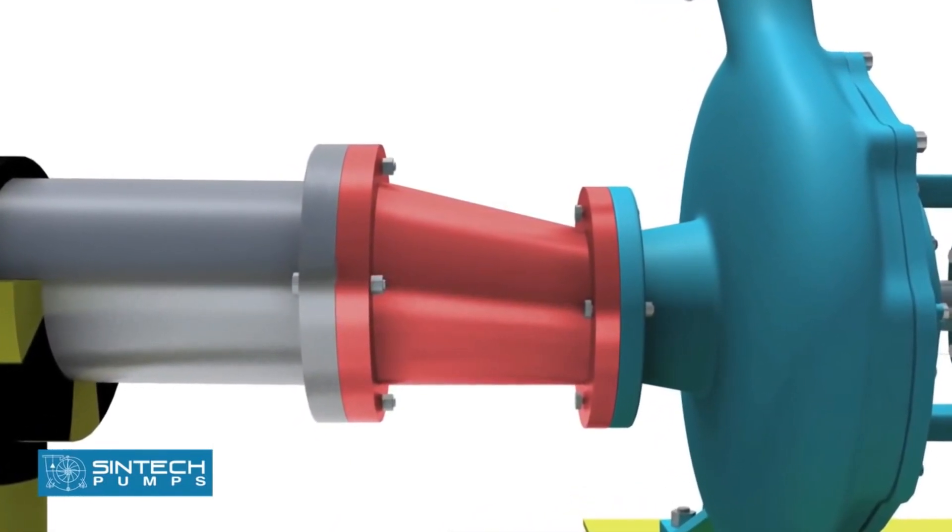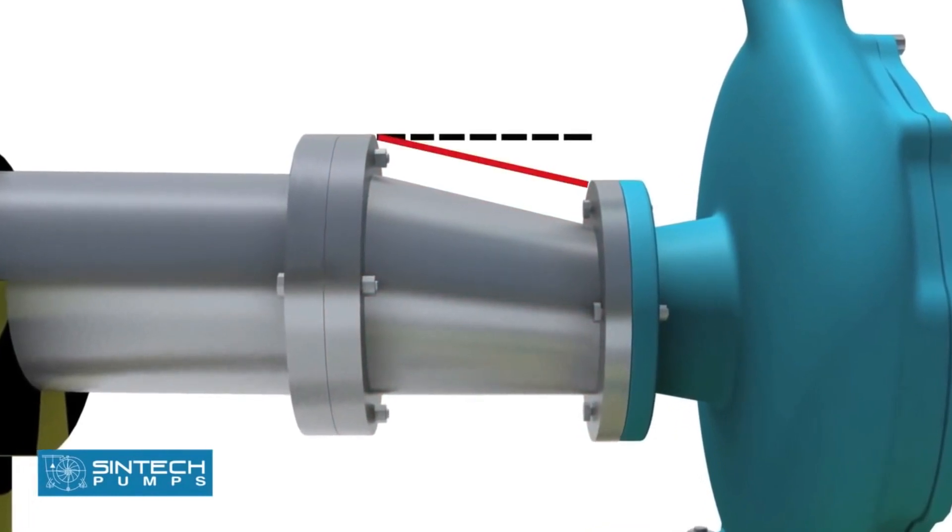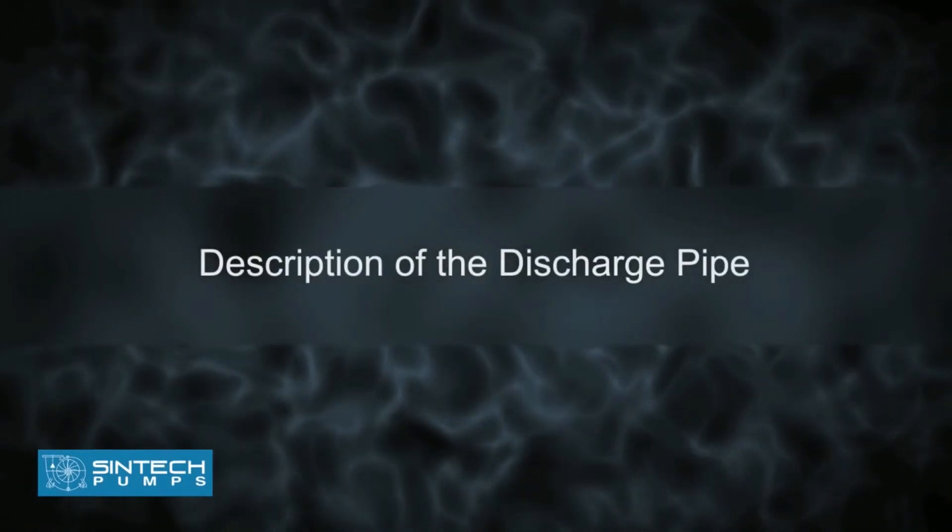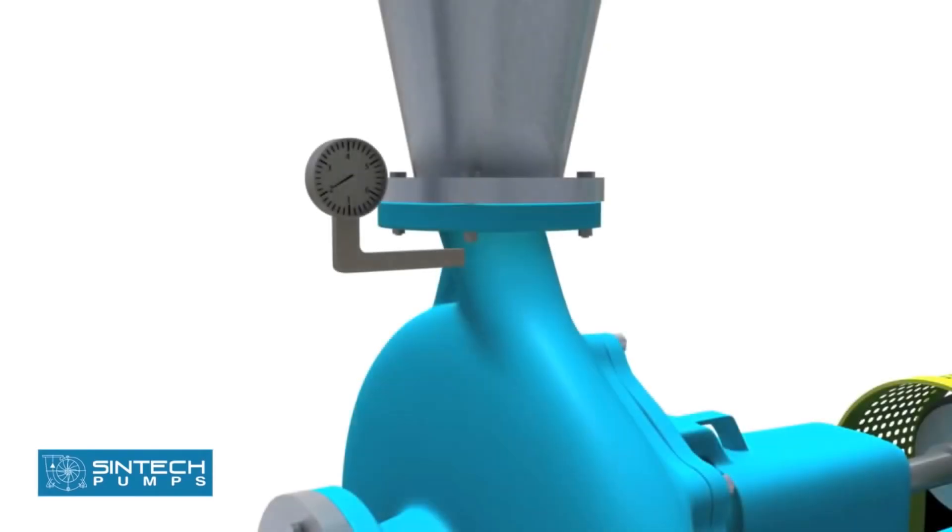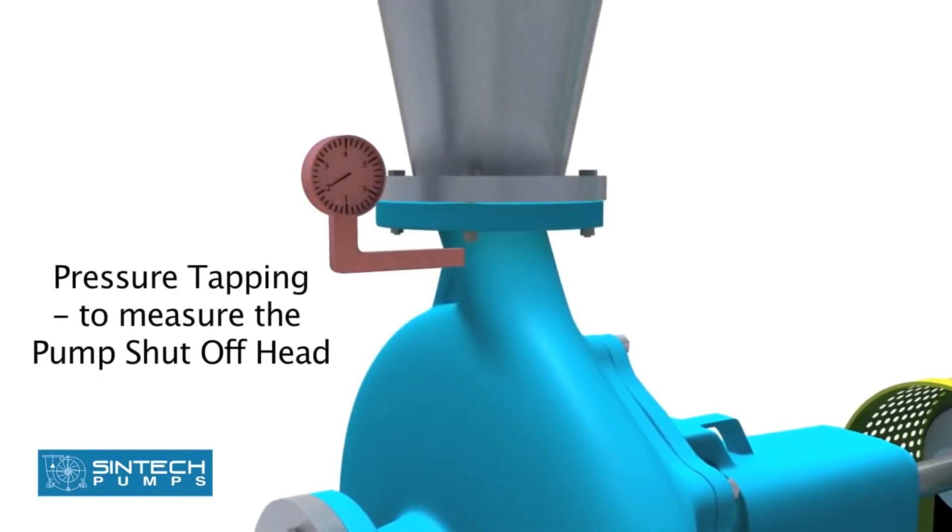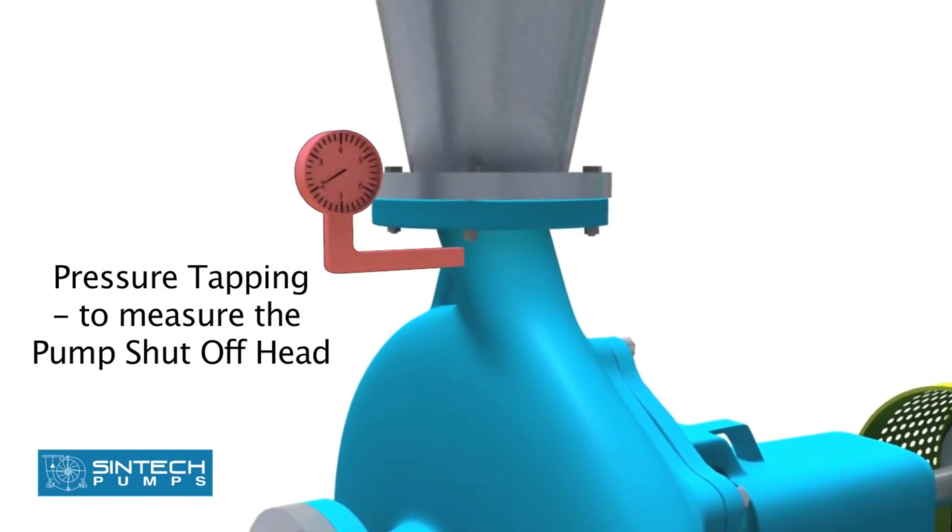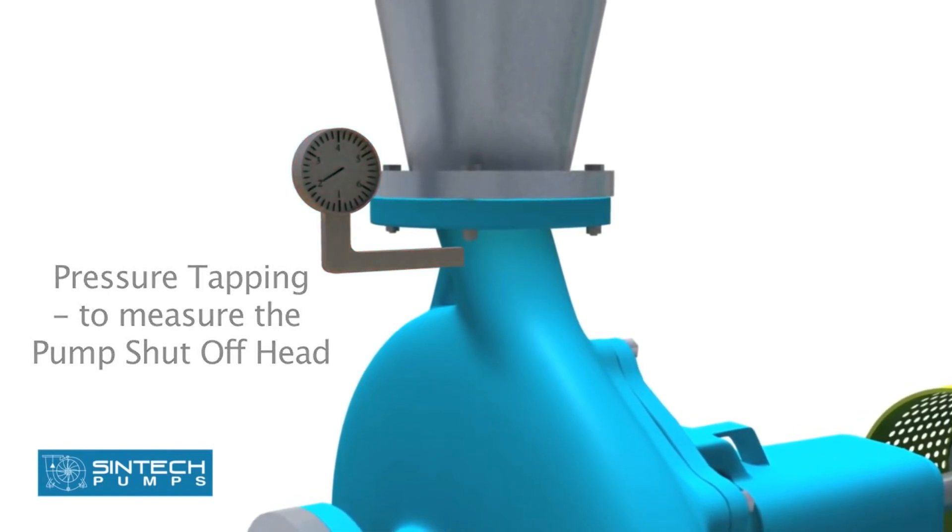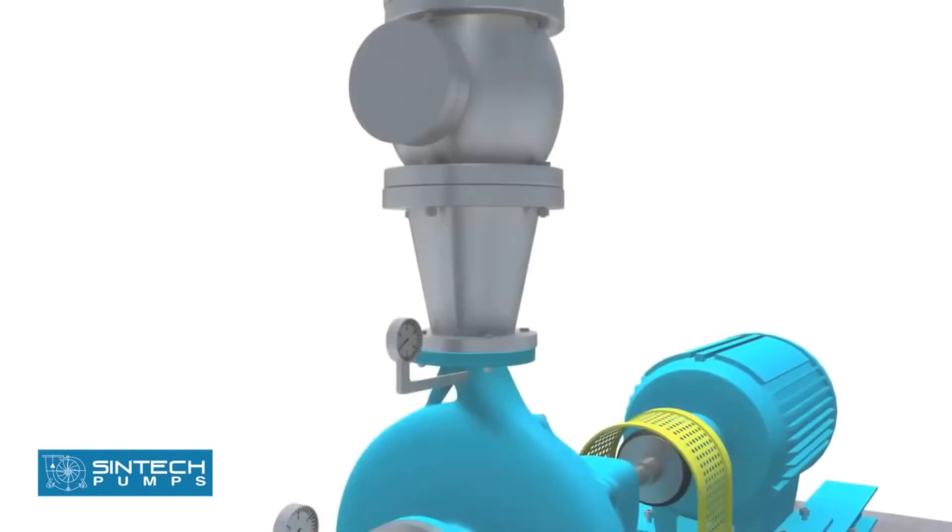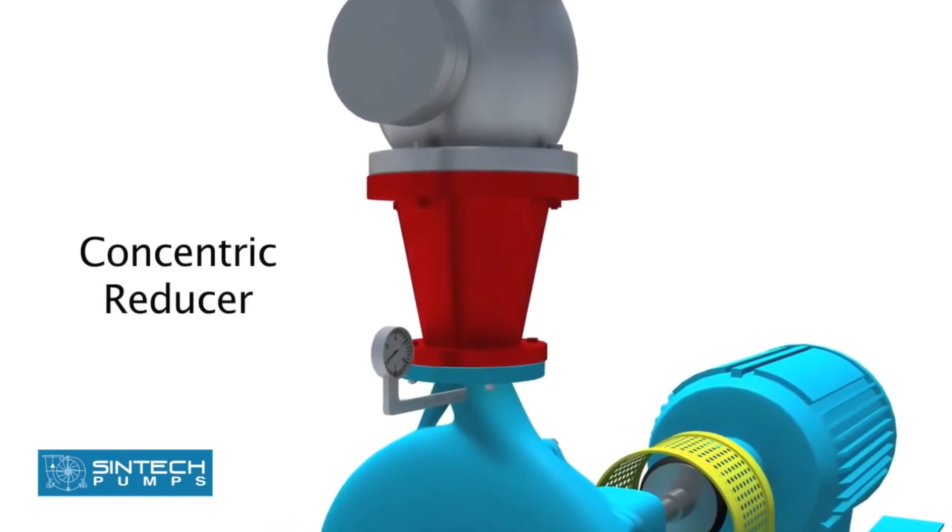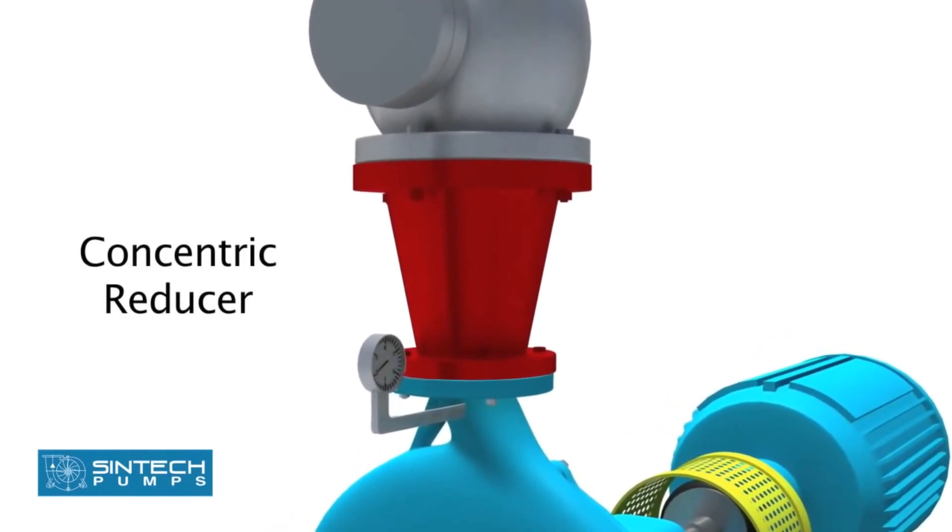The reducer joining the straight length of the pipe in the pump line should be an eccentric reducer with the inclined side of the reducer as the top side. Description of the discharge pipe: There should be a pressure tapping as close to the pump outlet and before the isolation valve as possible to measure the pump shut-off head. Concentric reducers are installed in the discharge pipe to minimize friction and insulation losses.